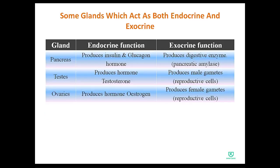Some glands act as both endocrine and exocrine. The first example is the pancreas. The endocrine function of the pancreas is that it produces insulin and glucagon hormones. The exocrine function of the pancreas is that it produces digestive enzymes called pancreatic amylase.